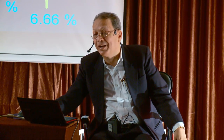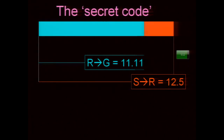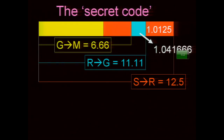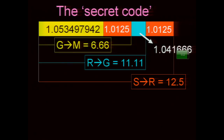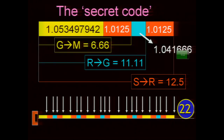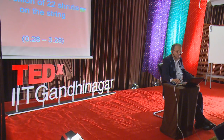You take the frequencies of Sa Ra Ga Ma and their percentage differences — 12.5%, 11.11%, and 6.66% — and plot the secret code: 12.5% (ratio 1.0125), 11.11%, 6.66% (ratio 1.041666), the same differences repeated. The fourth note is the remaining distance. With yellow, red, and blue distances on the pattern — red, yellow, red, blue, red — place it on a string and you arrive at all 22 Shrutis directly from nature, called Purna, Pramana, and Nuna Shrutis by Bharata Muni 2000 years ago.